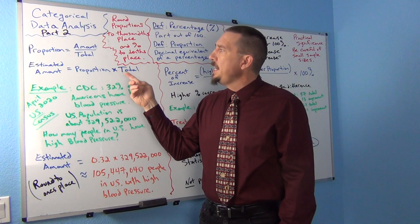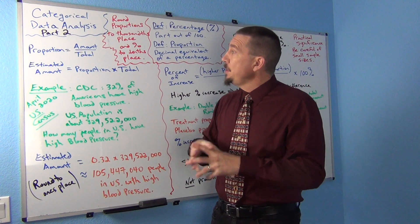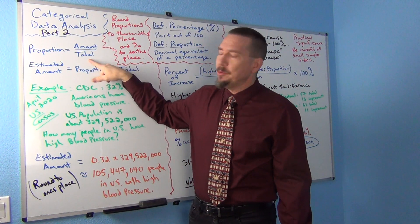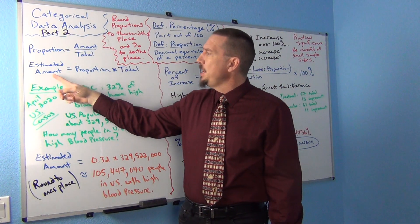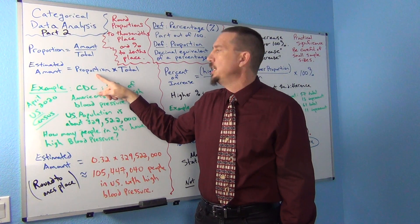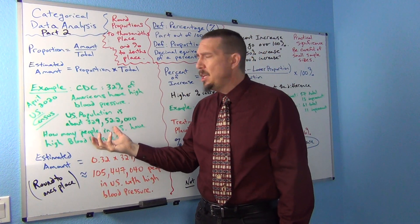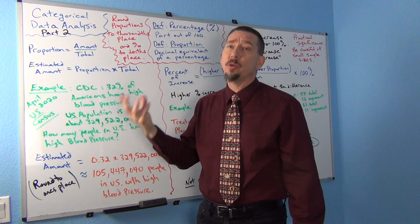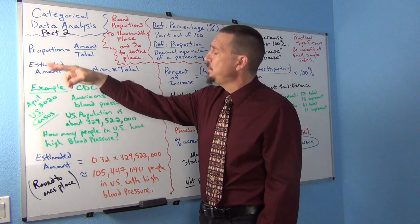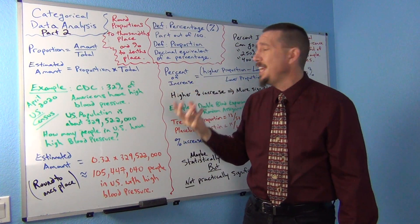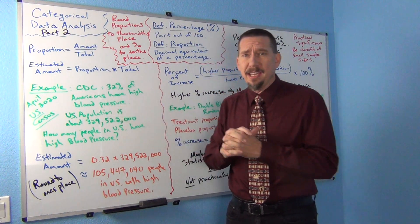But actually you can use that formula to estimate amounts. So if you multiply both sides of this formula by the word total, did a little algebra on this formula, you'd get this that an estimated amount is equal to the proportion times the total. Sometimes we refer to this as taking a percentage of the total but it's not actually really the percentage. It's the decimal equivalent of the percentage, the proportion times the total. So it's actually a pretty famous formula and we use this quite a bit especially on estimating populations that have certain characteristics.